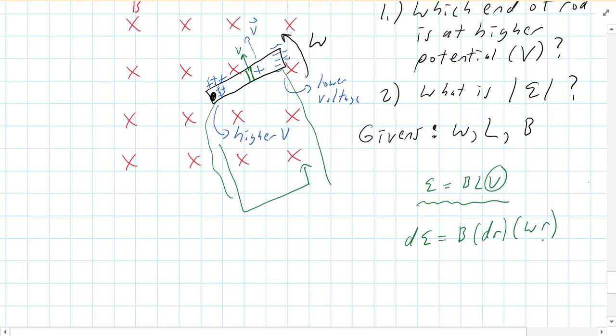So now you have an expression that we can integrate, and we're going to integrate both sides. This one will be 0 to E, and this one will be the bar starts at 0, and what's the final radius? Well, that's the length of the bar L.